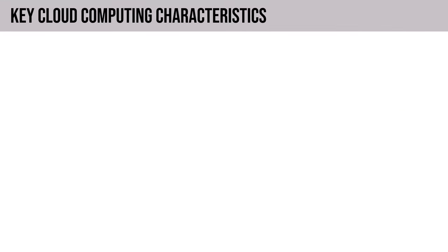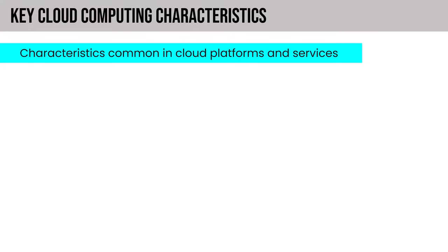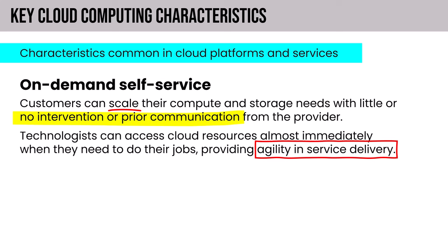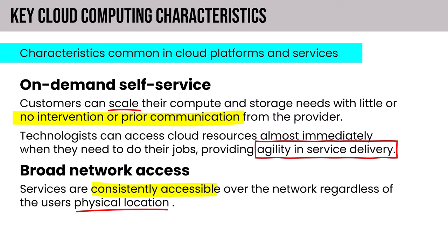Now let's look at key cloud computing characteristics. On-demand self-service means customers can scale their compute and storage needs with little or no intervention from the provider — they can use what they want, when they want. Technologists can access cloud resources almost immediately, providing agility in service delivery. Broad network access means services are consistently accessible over the network regardless of the user's physical location, which is why the big CSPs all have a global presence.